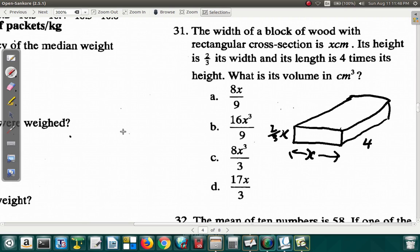Alright, so it's four times the height. Remember, the height is two-thirds x. So it's four times two-thirds x. Remember, the width is x. The height is two-thirds its width, two-thirds x. The length is four times the height, four times two-thirds x. What's the volume in centimeter cube?